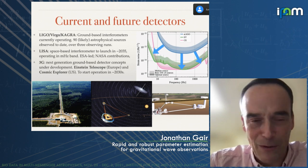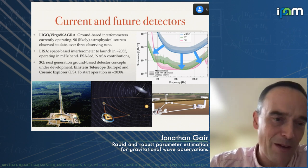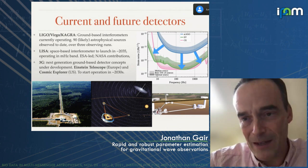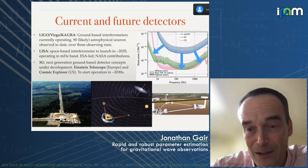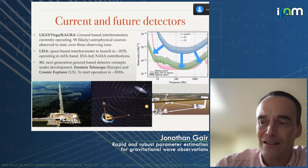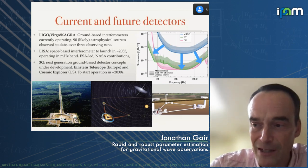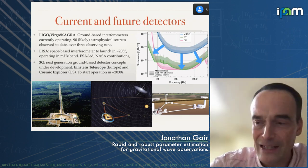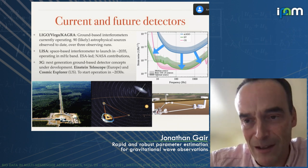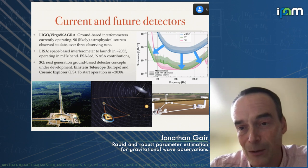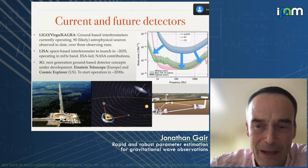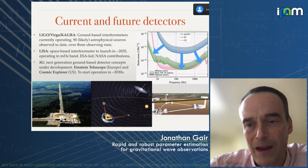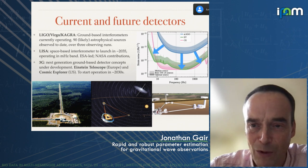LIGO is not the end of gravitational wave astronomy — it's only the beginning. There are plans for a number of future instruments. The most advanced in terms of planning is LISA, a space-based interferometer due to launch in the mid-2030s. By going into space you can avoid seismic noise, make your detectors much bigger, and access the millihertz gravitational wave band. In the millihertz band you see much more massive sources, typically containing supermassive black holes. LISA will be an ESA-led mission with significant NASA involvement, recently strongly endorsed in the decadal survey.